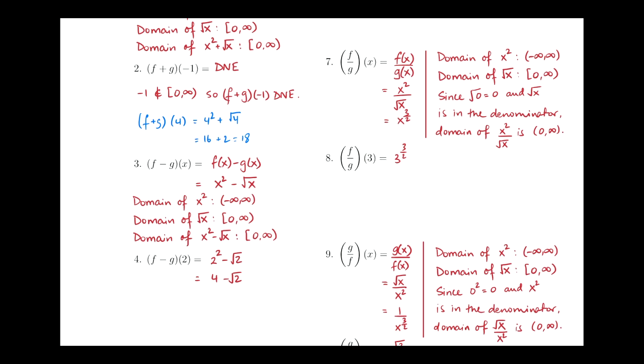And if we're asked to find f minus g of 2, well, I already found f minus g of x. All I have to do is plug in 2 in there, so I would get 2 squared minus square root of 2, which is right here. And then we can simplify 2 squared into 4, and then minus root 2 just comes along for the ride. We can't do anything else with it.